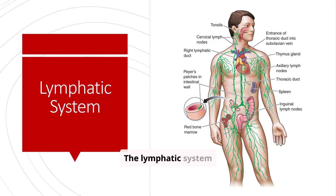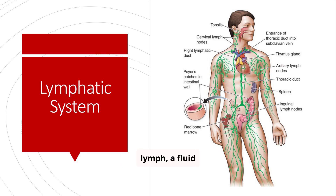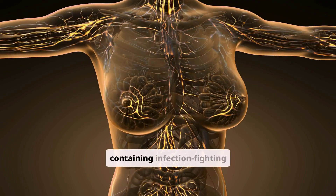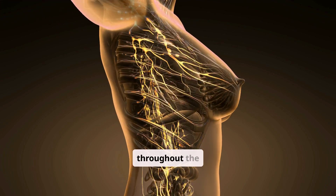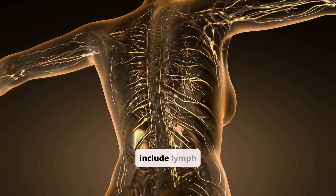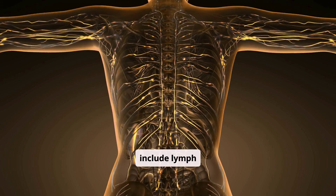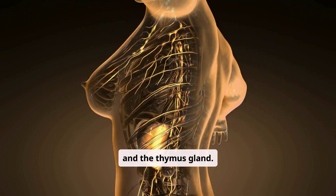The lymphatic system plays a crucial role in our immune response. It's a network of vessels and tissues that transport lymph, a fluid containing infection-fighting white blood cells, throughout the body. Key components include lymph nodes, the spleen, and the thymus gland.